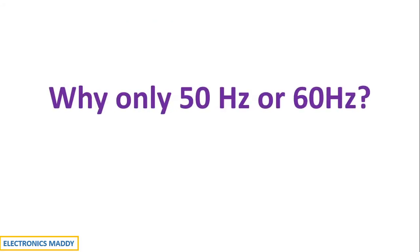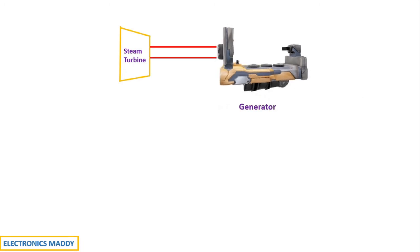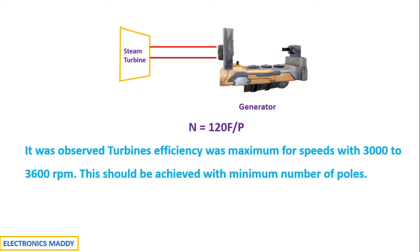But why only 50 Hz or 60 Hz? As I mentioned previously, the turbine drives the generator as shown through a prime mover. We know that N is equal to 120 F by P. From studies, it was found that turbines operate at maximum efficiency at speeds of 3000 rpm to 3600 rpm. This should be achieved with minimum number of poles because the construction cost of the poles are very high and hence this adds up to the overall cost of the system. So, the objective is to reduce the number of poles.